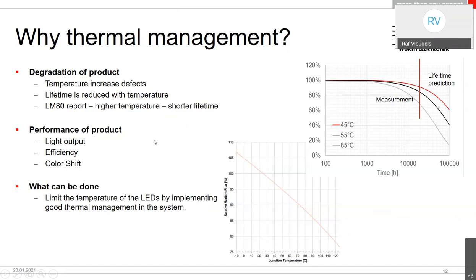The second reason is performance. We specify optoelectrical parameters at 25 degrees junction temperature — 100% relative radiant flux. If the junction temperature rises to 110 degrees, you already lose 20% of the light output. With the same input power but less optical output, efficiency drops. A higher temperature also causes color shift, which may or may not be critical depending on the application. Low power LEDs below 100 mW can tolerate very high thermal resistance and still maintain acceptable junction temperatures, but with high-power LEDs — several watts — thermal resistance becomes critically important.